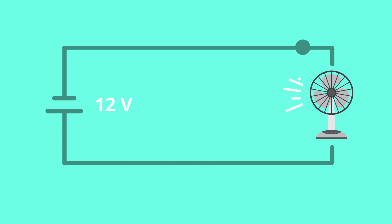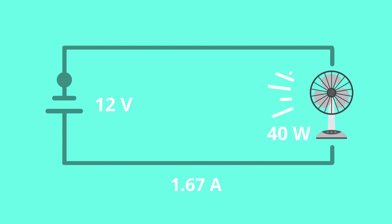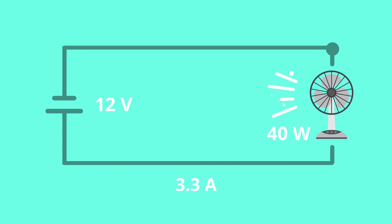For instance, with a 12-volt battery and a fan that needs 20 watts to operate, the fan would draw 1.67 amps of current. If we upgrade to a fan that needs 40 watts, it would draw 3.3 amps instead. As you can see, wattage is correlated to both amperage and voltage — the higher those two factors, the higher the wattage.